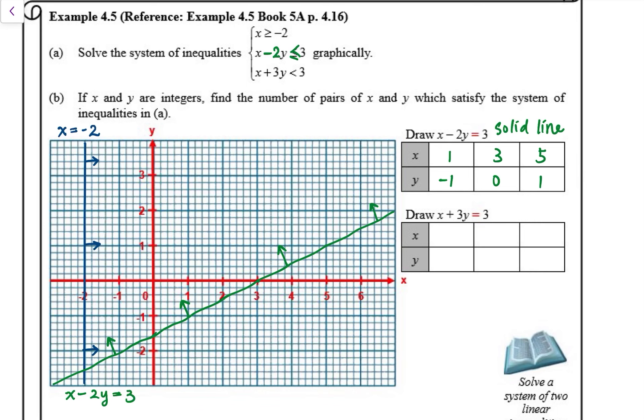And we'll come to the next one. x plus 3y equals 3. And we have a dotted line. Let's determine the solutions.